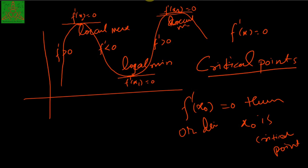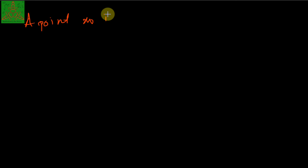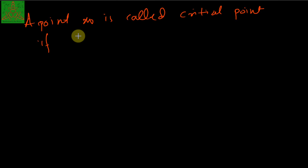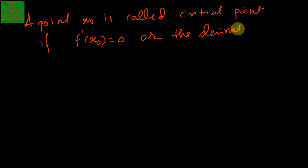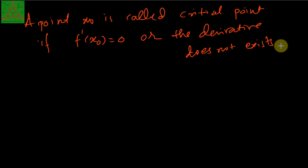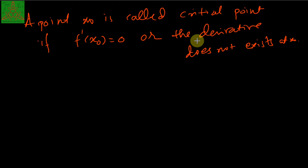A point x0 is called a critical point if f′(x0) = 0 or the derivative does not exist at x0. This is the definition of the critical point.